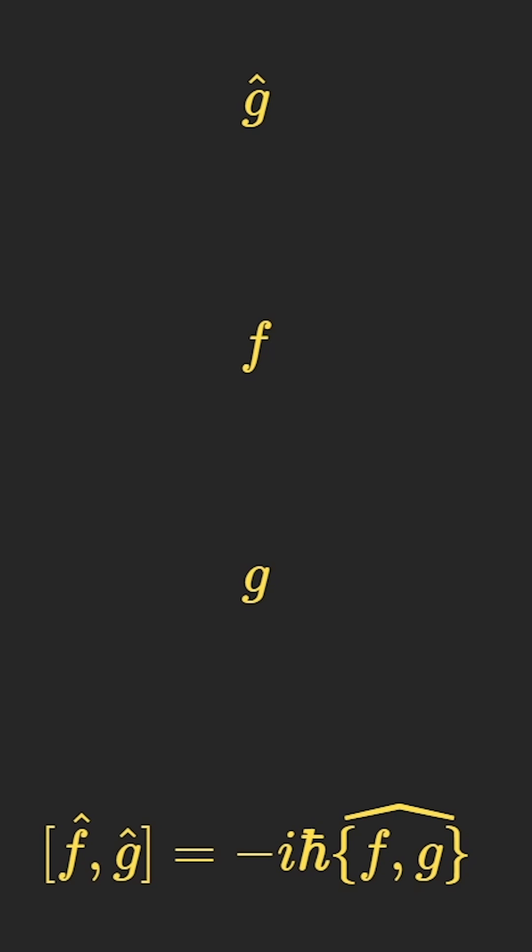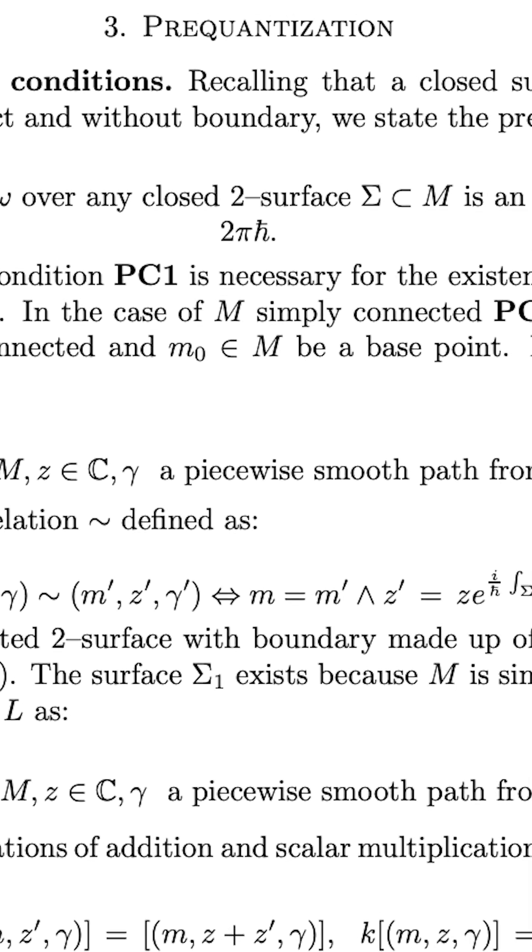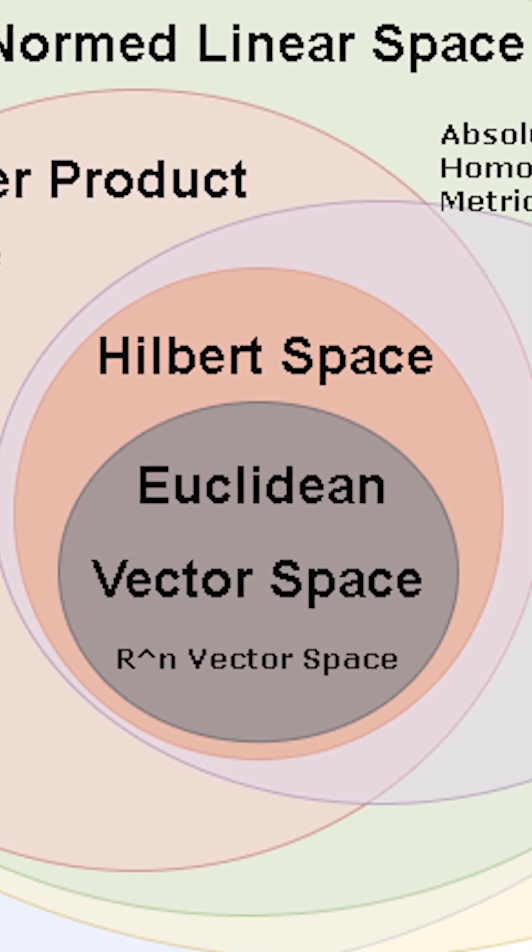Well, what we do is we let the Lie bracket equal something proportional to the Poisson bracket. Now, what sucks is that this pre-quantization alone isn't sufficient. It leads to way too large of a Hilbert space.